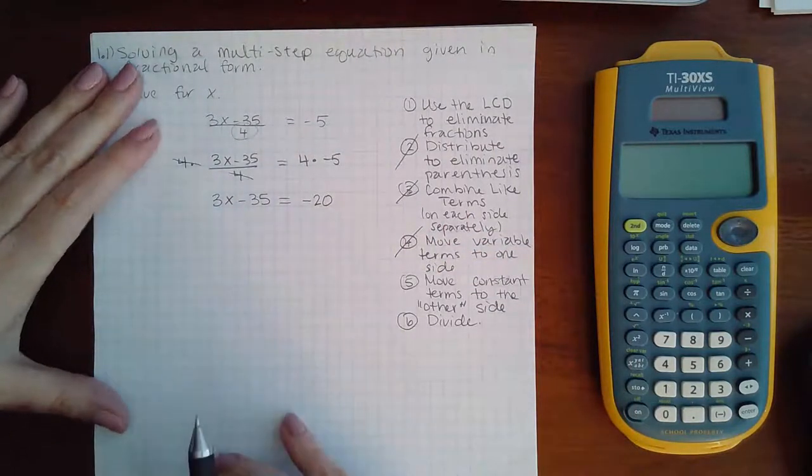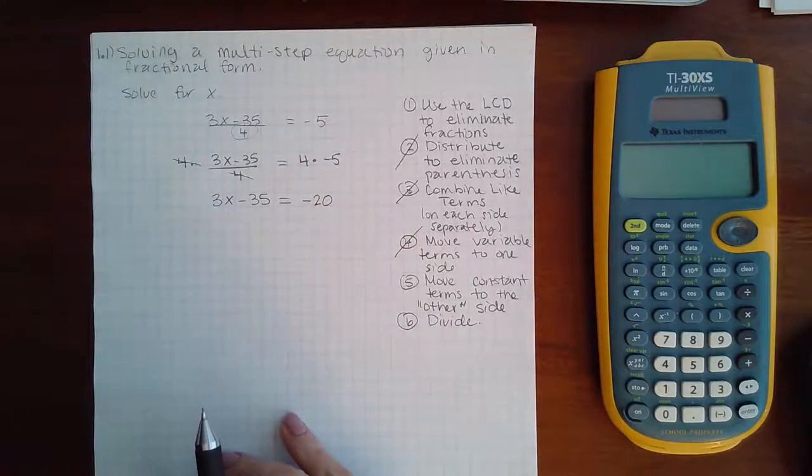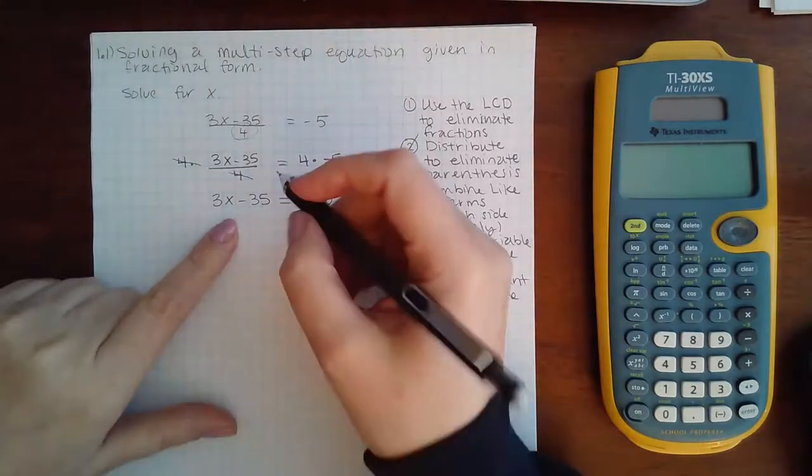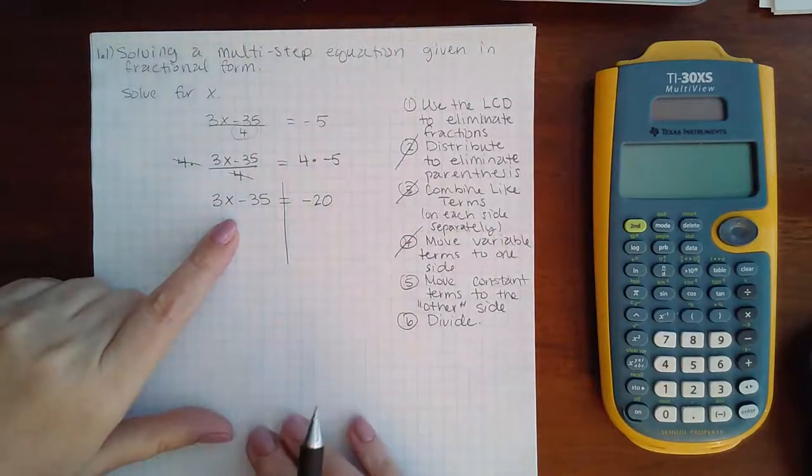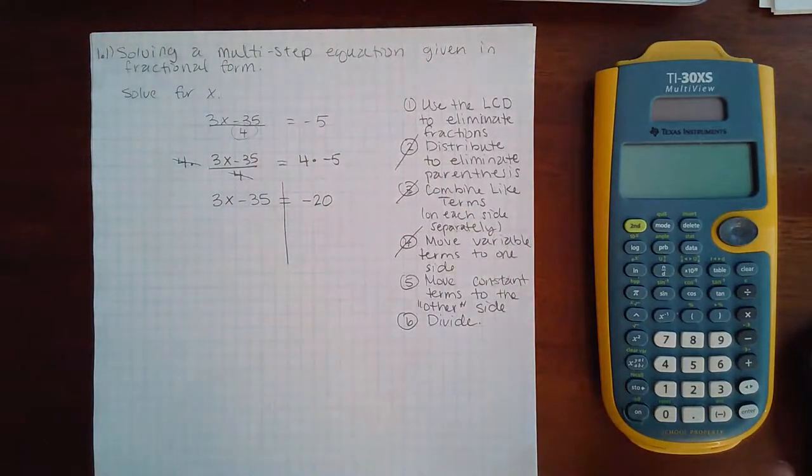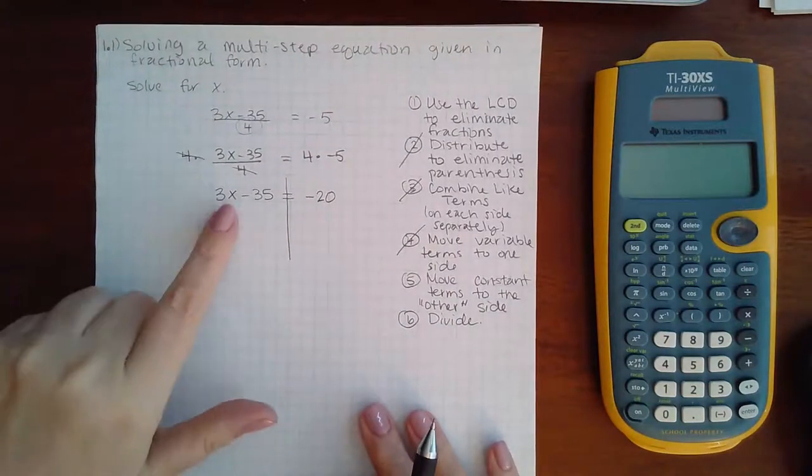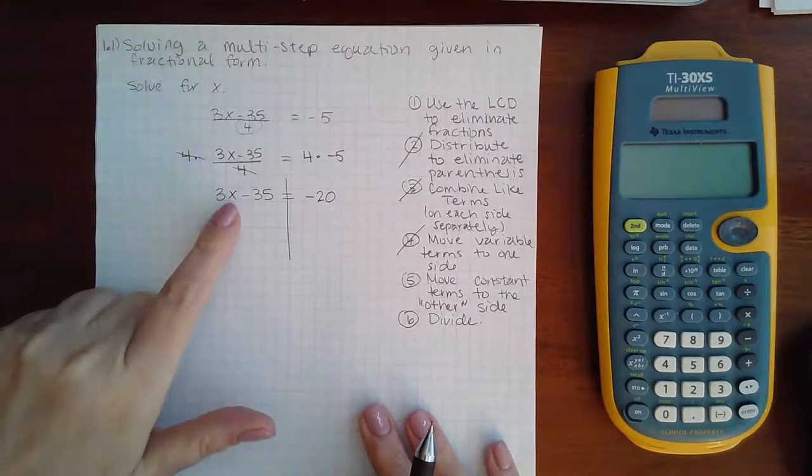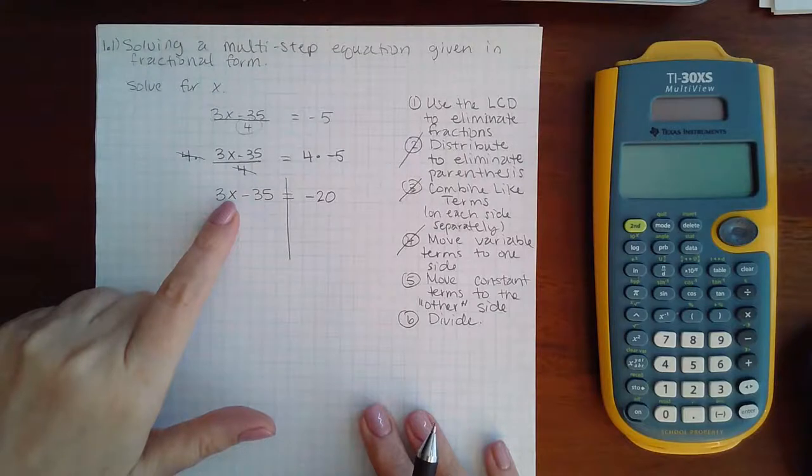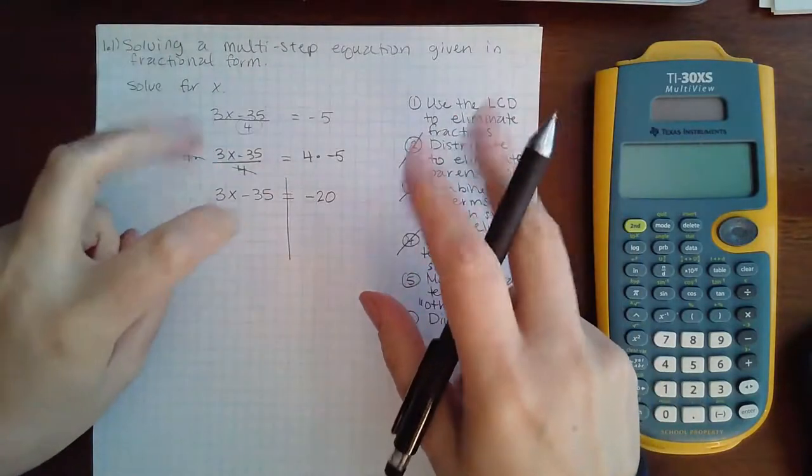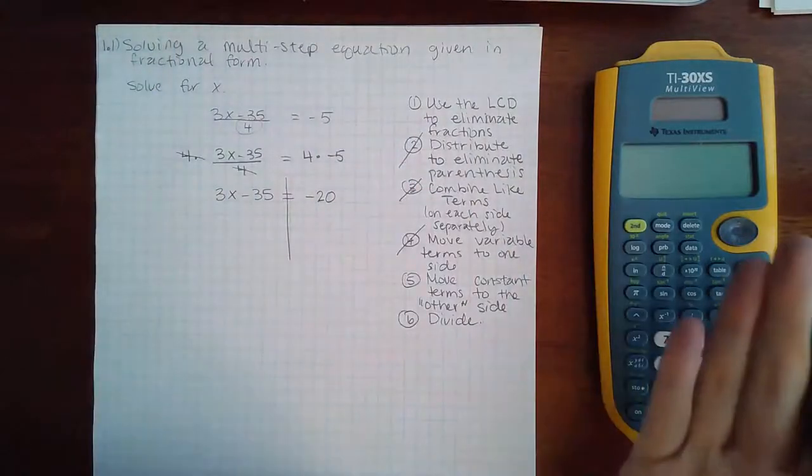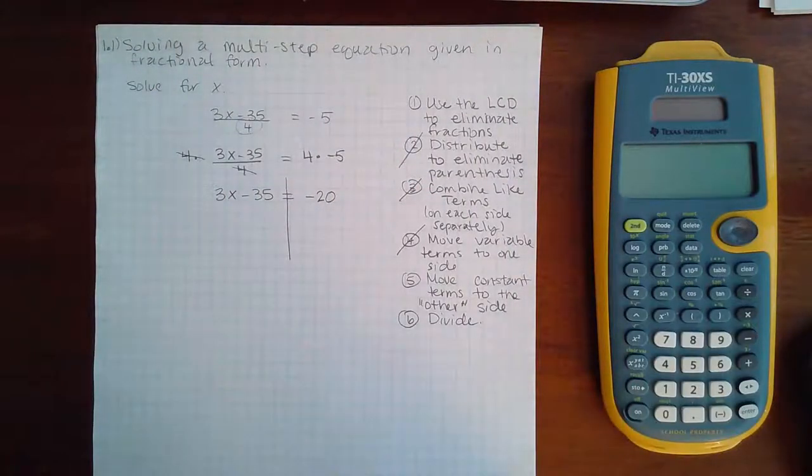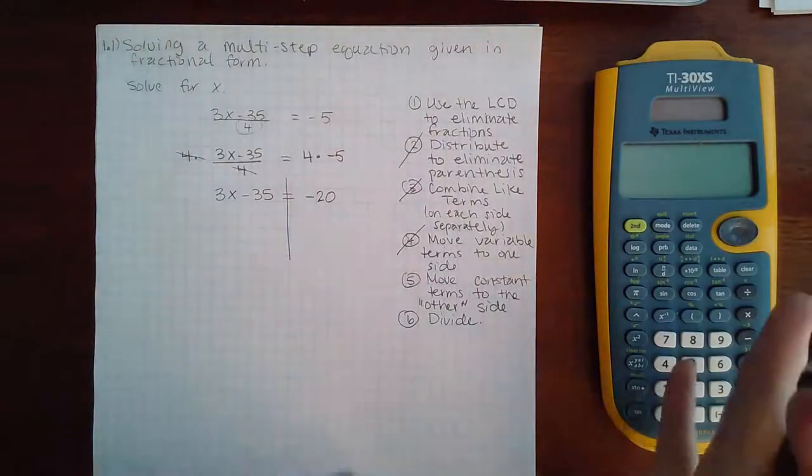Now step five says for me to move the constants to the other side. So when they say this side or that side, they're talking about the equal sign. The left side of the equal sign and the right side of the equal sign. Now all of my variables are on the left side of the equal sign. So this other side for this particular problem is the right side. So I need to move my constants over to the right side.